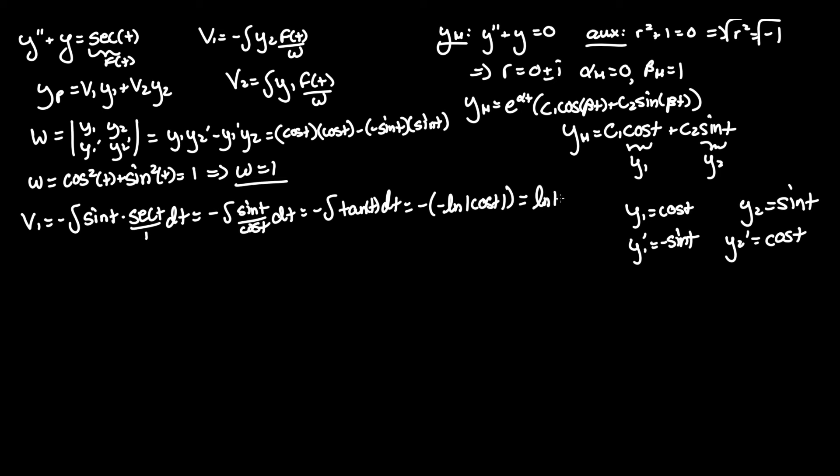Factoring in that negative on the outside, it turns into positive ln cos t. That's v1, that was pretty fast. v2 on the other hand equals integral of y1, which is cos t, times the same f of t, so secant t. We can just leave out the one denominator, and fortunately for us cos t and secant t are inverses, so they cancel out to be one.